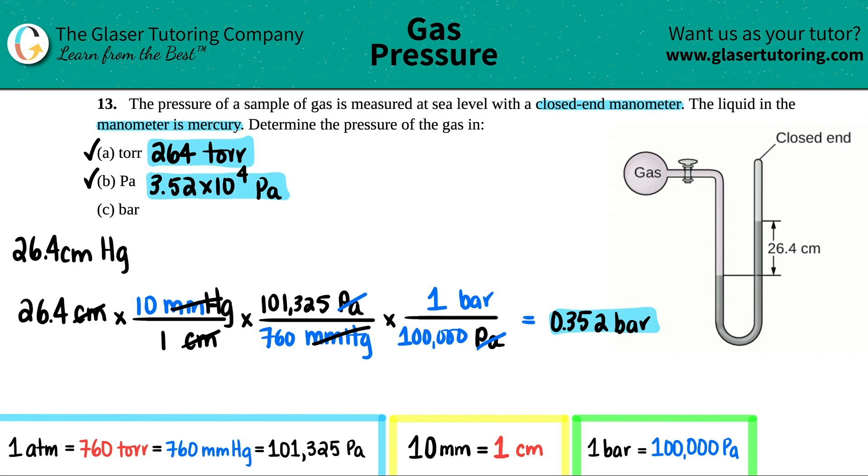There you go guys, hopefully this helped. Just know that all four of these—26.4 centimeters of mercury is the same thing as 264 torr, which is the same thing as this in pascal and the same thing as bar. It's just different units for pressure but they all are equivalent. I really hope this helped. Let me know in the comments, thank you so much for viewing the video. Subscribe if you want to help us out. Good luck on all your future tests. I'll see you in the next lesson, bye.